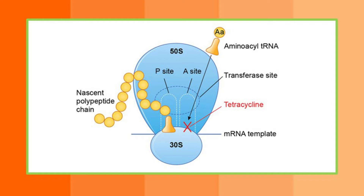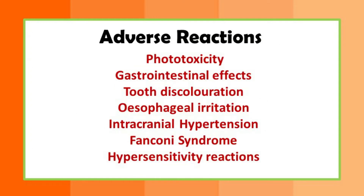Tetracyclines are protein synthesis inhibitors. They bind at the 30S ribosomal subunit, specifically preventing the binding of aminoacyl-tRNA to the mRNA-ribosome complex. This produces a bacteriostatic effect, meaning they prevent further bacterial growth rather than killing bacteria outright.